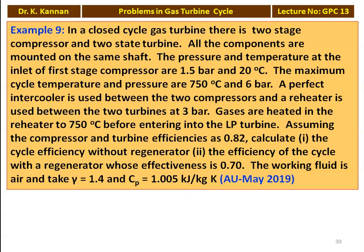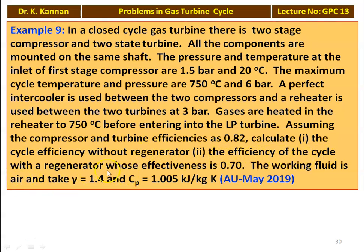The next example, example number 9, from May 2019 question paper. In a closed cycle gas turbine, there are two stages of compressor and two stage turbine. All components are mounted on the same shaft. The pressure and temperature at the inlet of the first stage compressor is 1.5 bar and 20 degree Celsius. The maximum cycle temperature and pressure are 750 degree Celsius and 6 bar. A perfect intercooler is used between the two compressors and a reheater is used between the two turbines at 3 bar. The gases are heated in the reheater to 750 degree Celsius before entering the LP turbine. Assuming compressor and turbine efficiency are 0.82, calculate the cycle efficiency without regenerator and the efficiency of the cycle with a regenerator whose effectiveness is 0.7. The working fluid is air; take gamma equal to 1.4 and Cp equal to 1.005 kJ/kg·K.